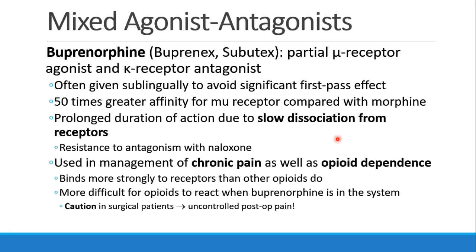Buprenorphine goes by the brand names Buprenex or Subutex. It is a partial mu receptor agonist and a kappa receptor antagonist — the opposite of Nubain. Patients often take it sublingually to avoid the first-pass effect when it goes to the liver. This drug is notable for having a tremendous affinity for the mu receptor, about 50 times greater than morphine. It has a very long duration of action because of its slow dissociation from those receptors, and it's hard to antagonize with naloxone because of its tight affinity for the mu receptor. Buprenorphine is usually used in patients who have chronic pain or opioid dependence. Since it binds more strongly to the mu receptors than other opioids, if the patient would choose to abuse other drugs, they will not experience any clinical effect from them.